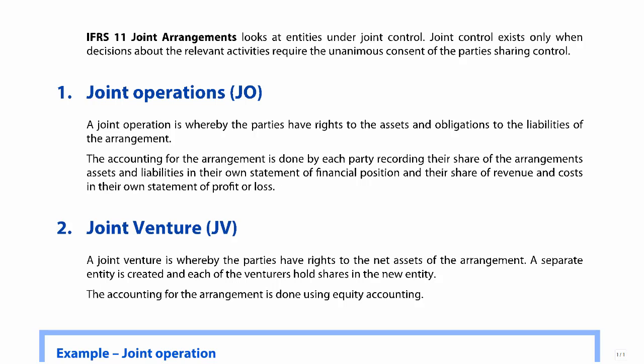Joint arrangements exist whereby we have joint control. So we have two parties coming together, and those two parties — to keep it simple — could own a 50-50 share of the entity or enterprise or business that we are operating. So by having 50-50, they have joint control.